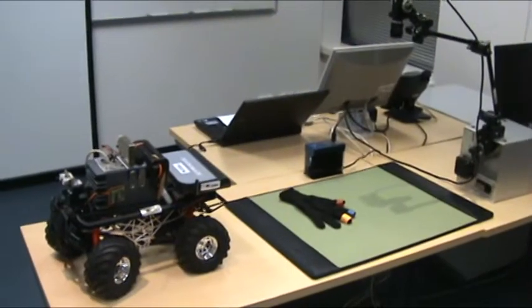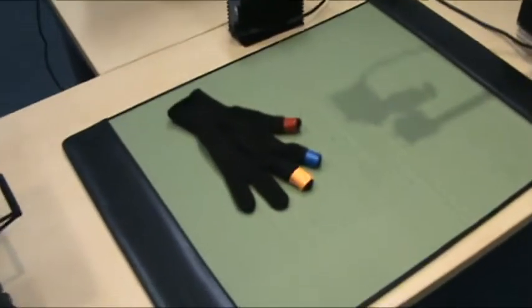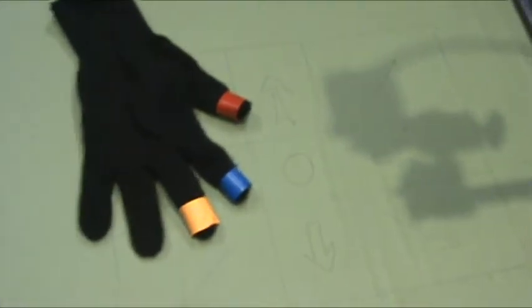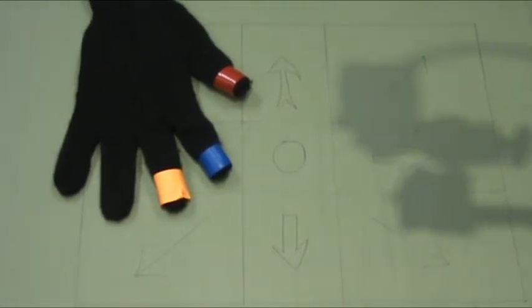The setup that we have used is as follows. We have a glove with three different colored tape to classify each finger. The glove can be worn and then the gestures can be placed on this green surface inside the border. The arrows denote the direction in which the robotic vehicle can be moved.